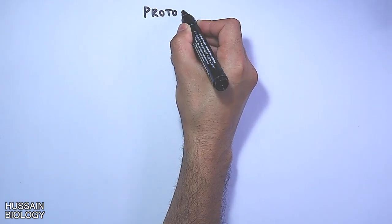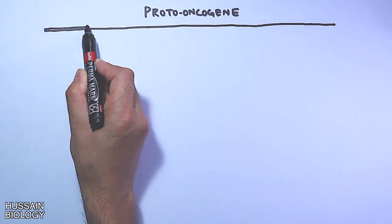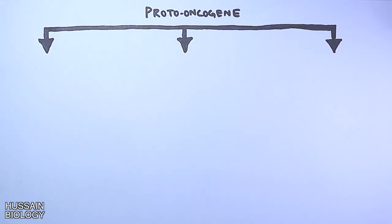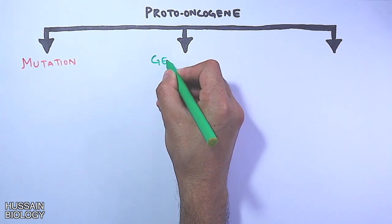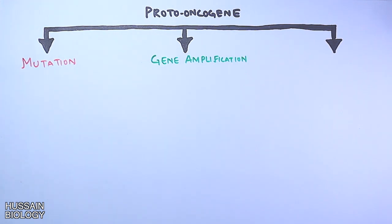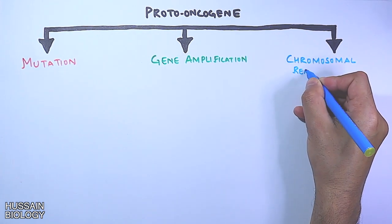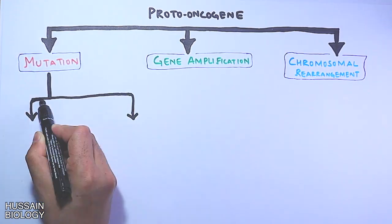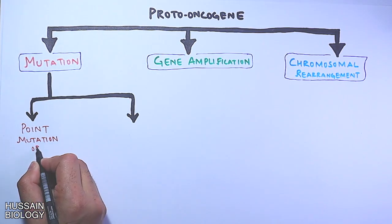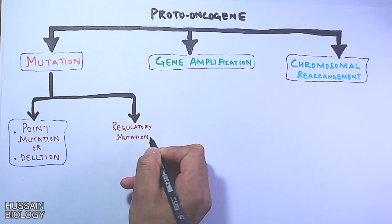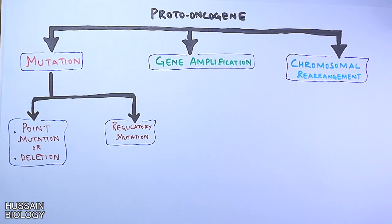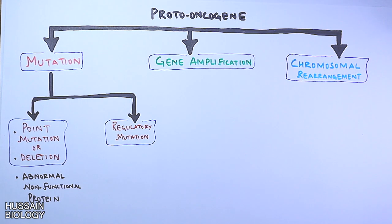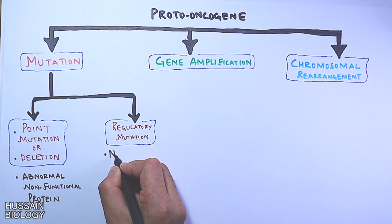There are three ways through which proto-oncogenes transform into oncogenes: first is mutation, second is gene amplification, and third is chromosomal rearrangement. Mutations can be point mutations or deletions, or regulatory mutations. From point mutations or deletions we get an abnormal, non-functional protein, whereas from regulatory mutations we get a normal protein that is always overexpressed.